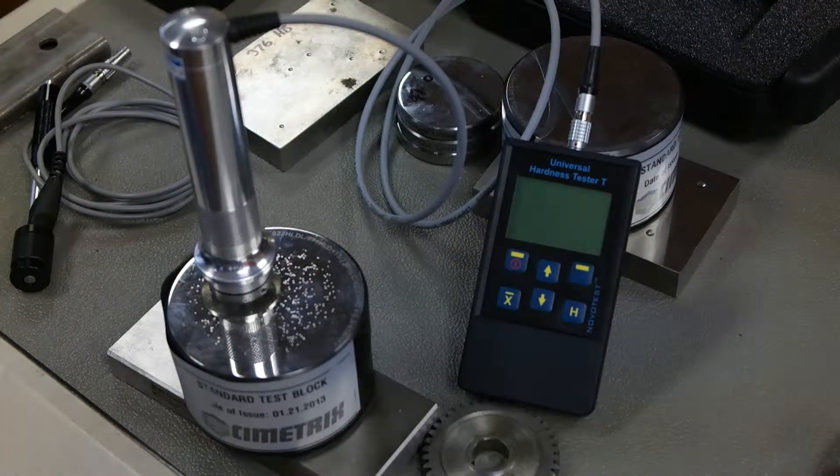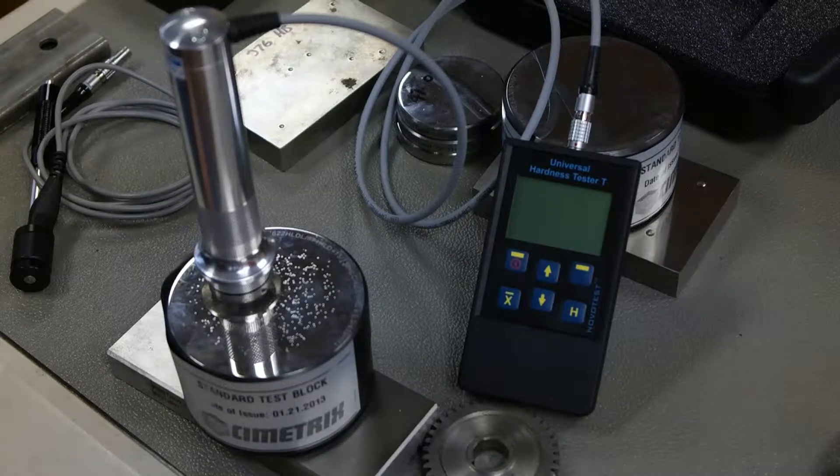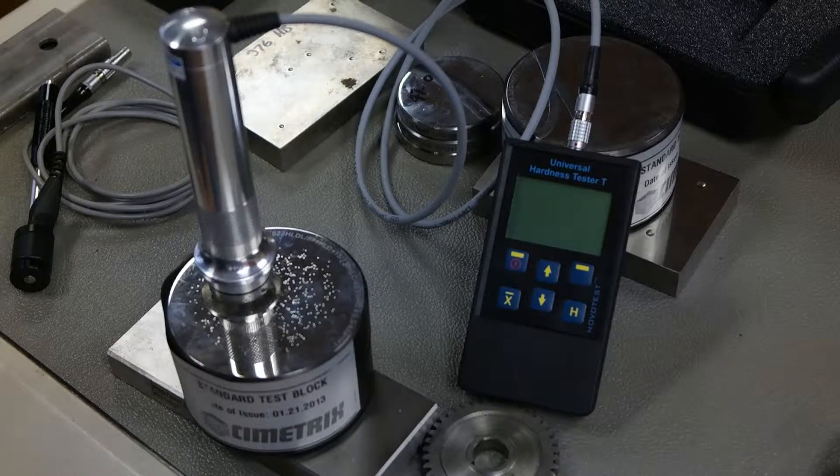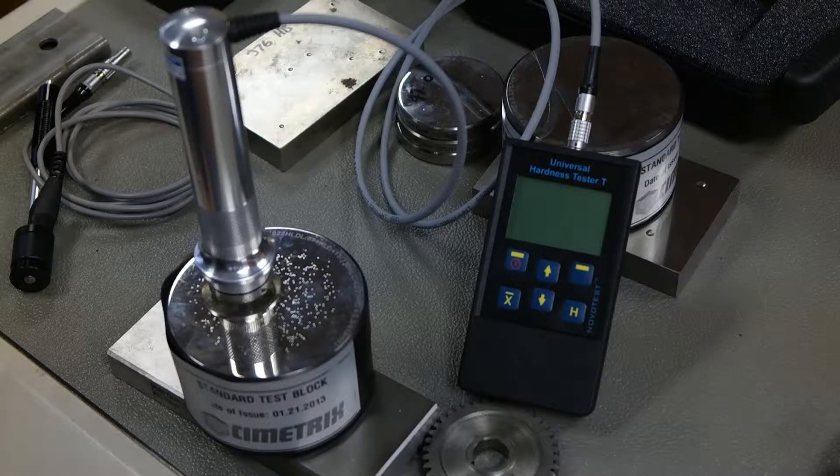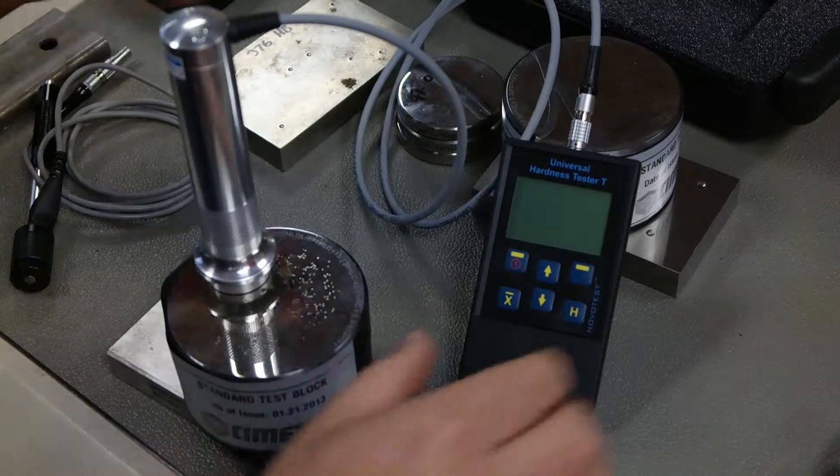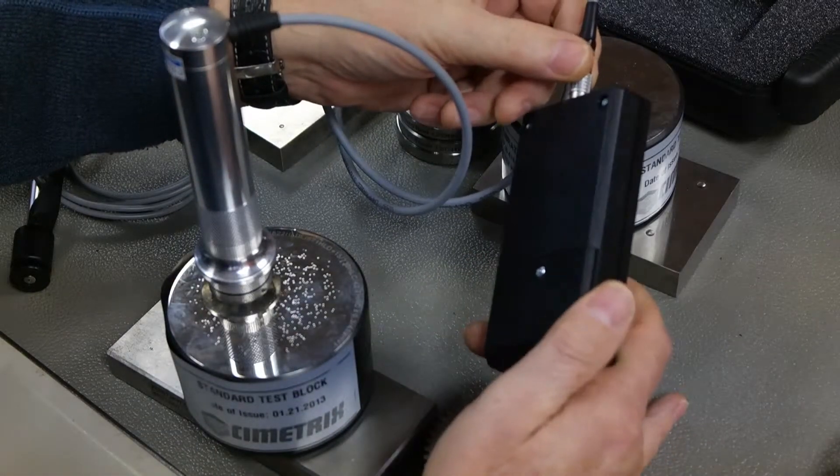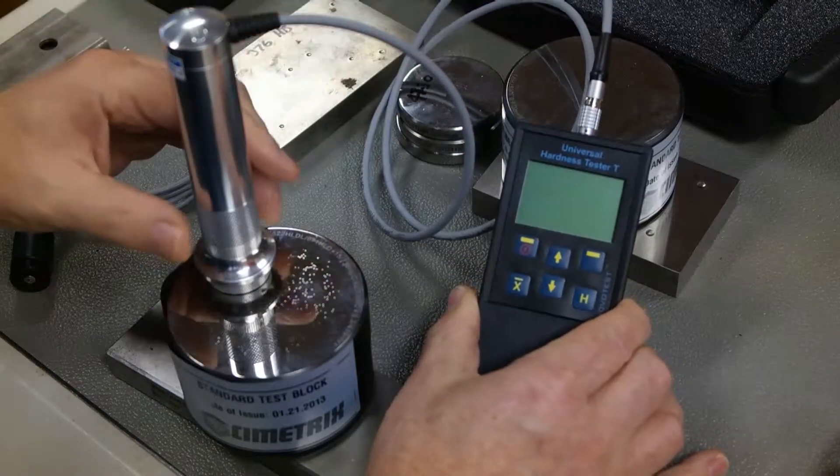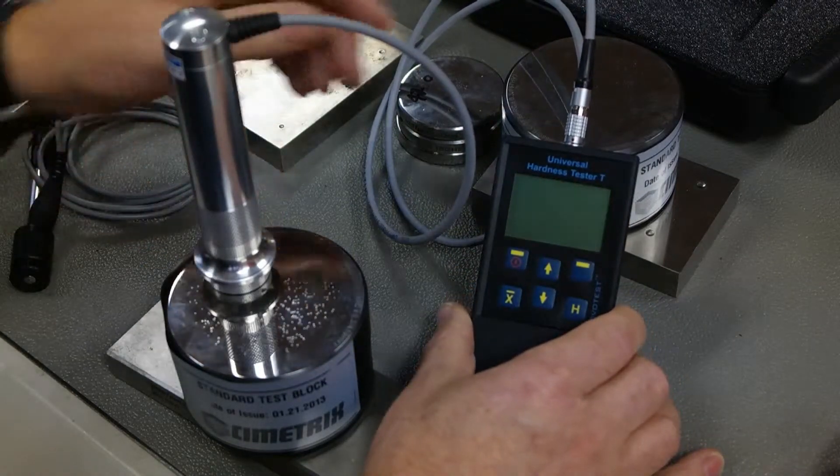Today we're going to demonstrate the features of the TCM-U2. This is the baby brother of the TCM-U3 color model. It's a very compact, super lightweight unit. With the probe and tester, it's less than two pounds in weight.